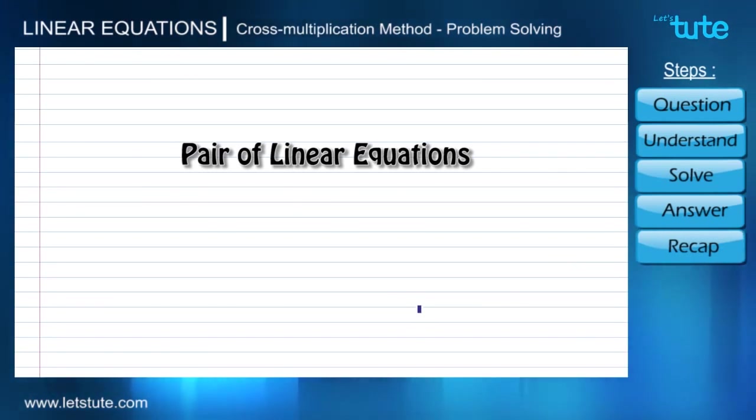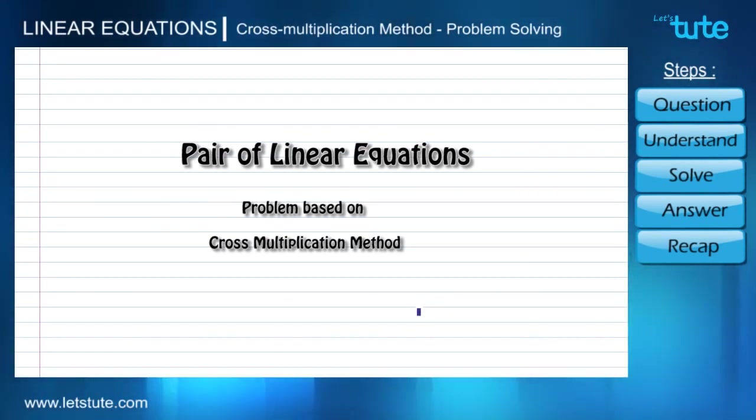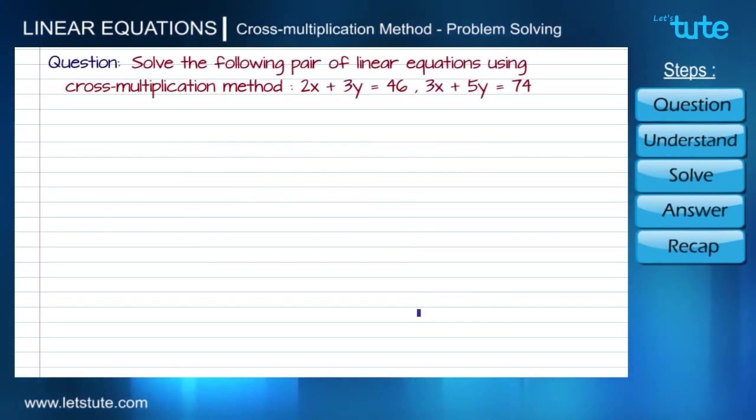Hello everyone, welcome to the problem solving session of pair of linear equations. In this session we are going to solve a problem based on cross multiplication method. Here is the question: solve the following pair of linear equations using cross multiplication method. The equations are 2x + 3y = 46 and 3x + 5y = 74.